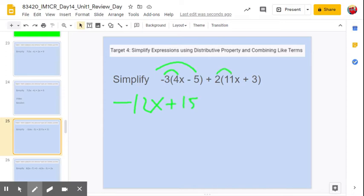2 times 11x is plus 22x. And 2 times 3 is plus 6.